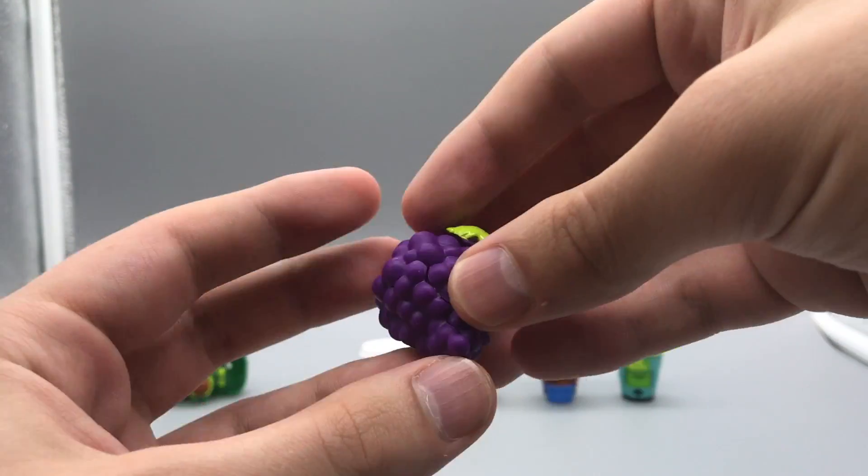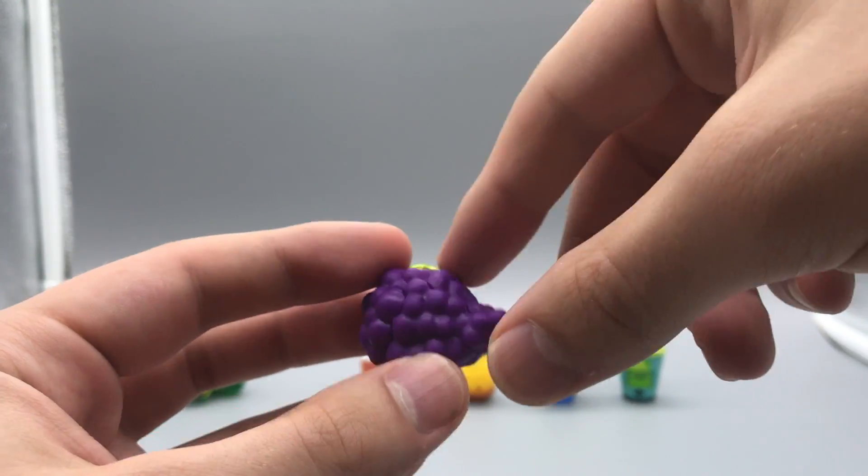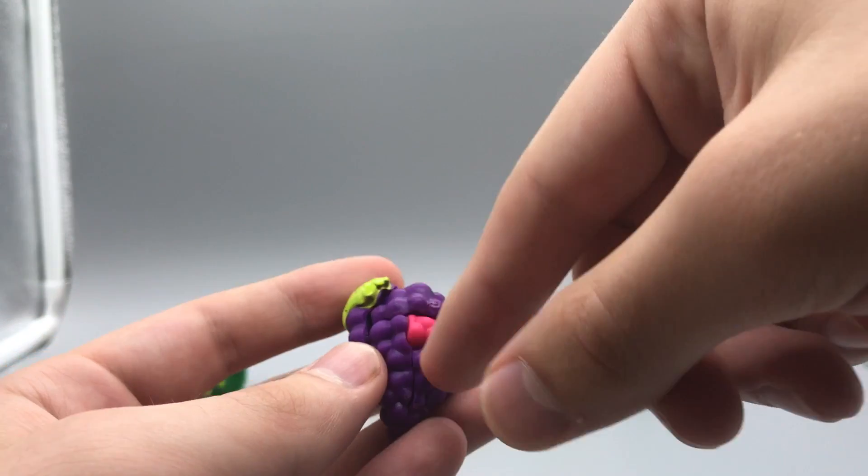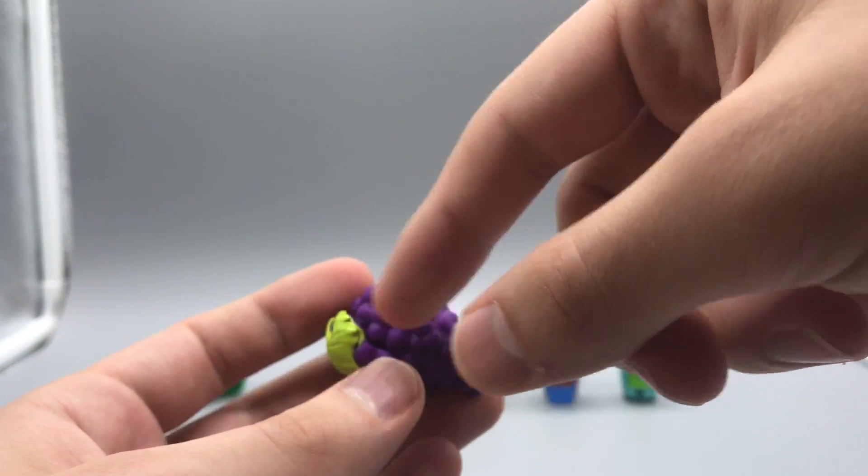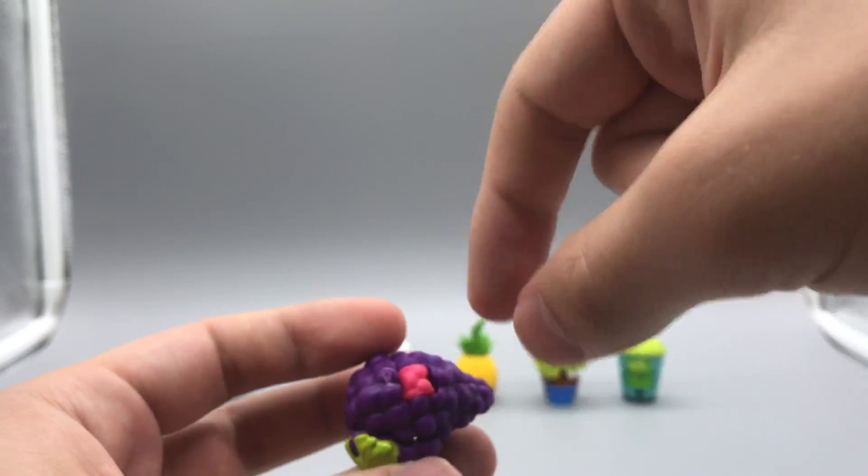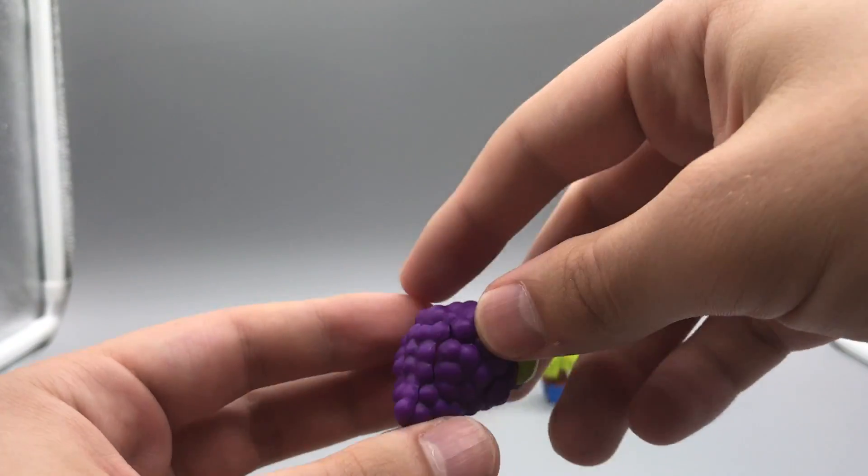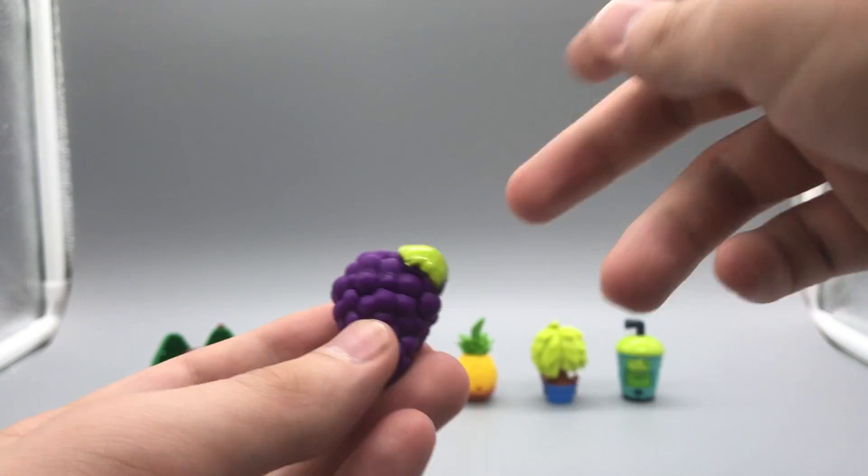And again, a bunch of grapes. You got purple bubbles all over. Purple grapes all over. You got a bit of a leaf up here. The only imperfection besides the seams is this pink bit in the back here. But again, this is a perfectly solid bunch of grapes.